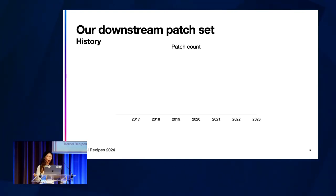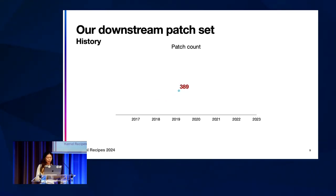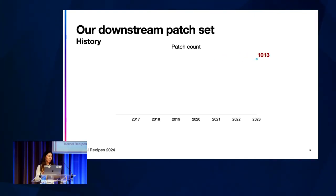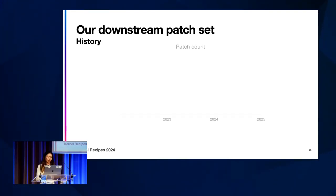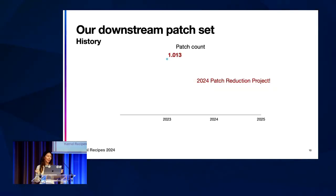So why do we even have it? Why does it take more than a year? Over time, the first Nitro instance was launched in 2017, and over the years the patch set grew. We didn't do much about it, and we got to around a thousand patches. In 2023 we decided this number is very big — maybe we should do something about it. So I got this 'very easy project,' and that's basically what I work on.